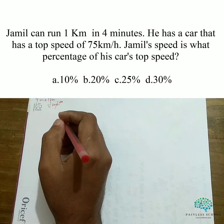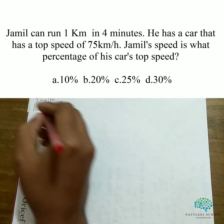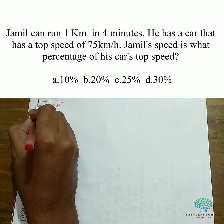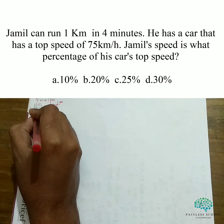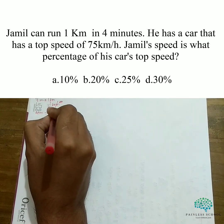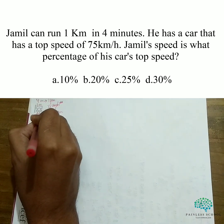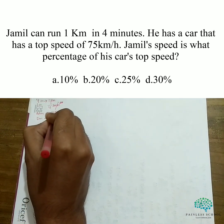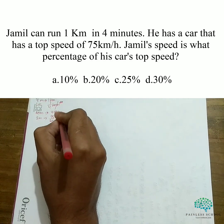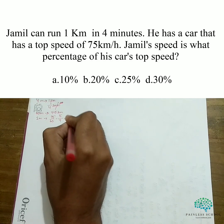Kilometer per minute. He has a car and its top speed is 75 kilometers per hour. That means in 60 minutes the car goes 75 kilometers. So per minute it is 75 by 60, which is 5 by 4 kilometers per minute.